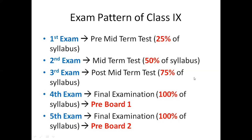On your notebook, after the syllabus, please write down how many exams there are and what percentage of the syllabus each covers. First, second, third, fourth, and fifth. Name of the exam and percentage of syllabus: first exam 25%, second exam 50%, third exam 75%, fourth exam 100%, fifth exam 100%. The fourth and fifth will be called pre-board 1 and pre-board 2.